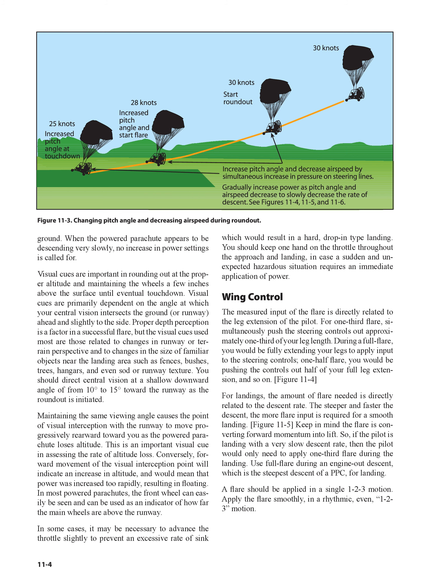You should direct central vision at a shallow downward angle of 10 to 15 degrees toward the runway as the roundout is initiated. Maintaining the same viewing angle causes the point of visual interception with the runway to move progressively rearward toward you as the powered parachute loses altitude — an important visual cue in assessing the rate of altitude loss. Conversely, forward movement of the visual interception point will indicate an increase in altitude, and would mean that power was increased too rapidly, resulting in floating.